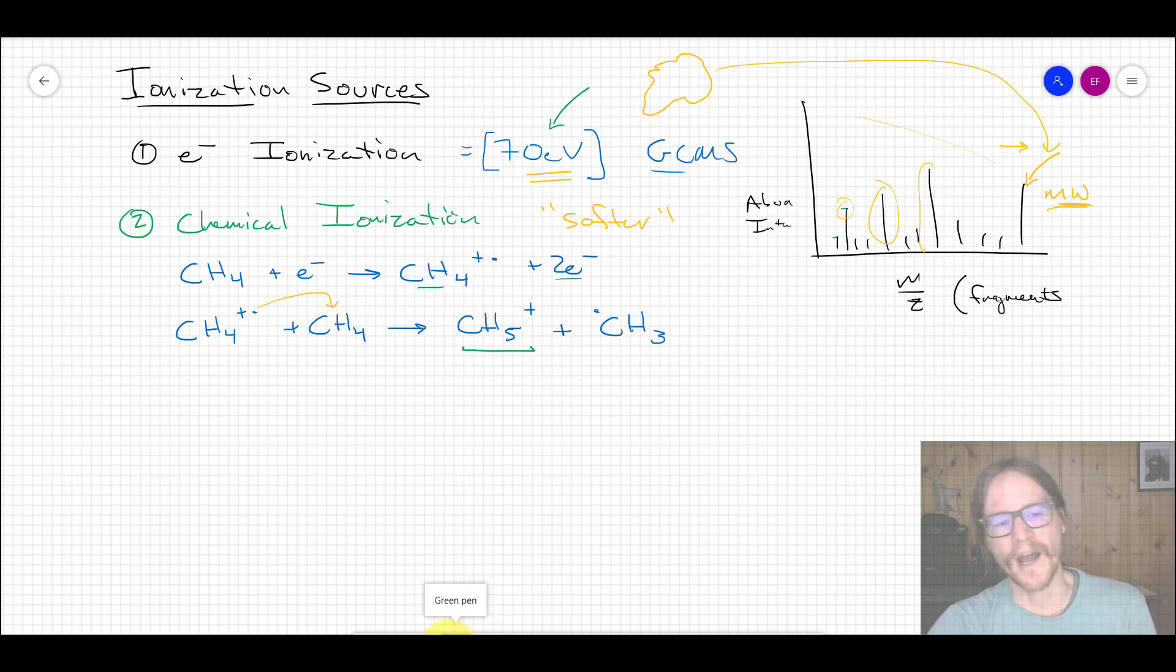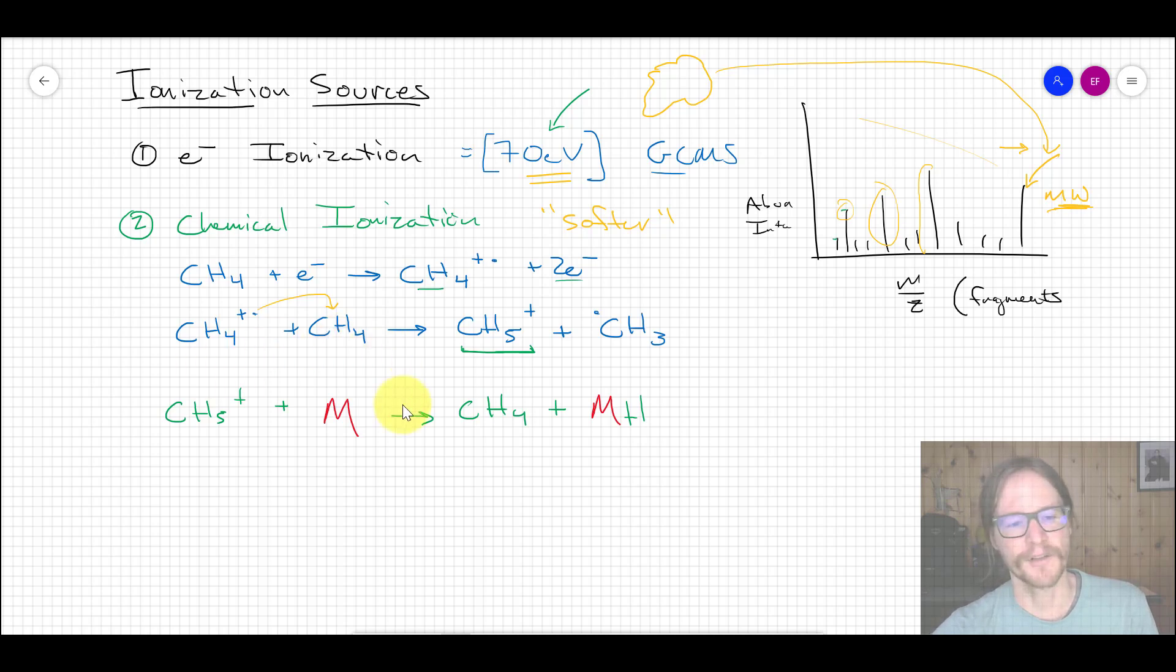And so that radical cation then comes in and extracts a proton from another CH4 molecule, creating this super reactive CH5+, which is essentially a super acid. It's just going to want to dump that proton to anything it can. And that's exactly what it does. In this case, I'm using this M, this red M, just as some generic molecule. But essentially what you have then is instead of passing your neutral molecules through the 70 electron volt beam, you pass it through this reactive gaseous atmosphere.